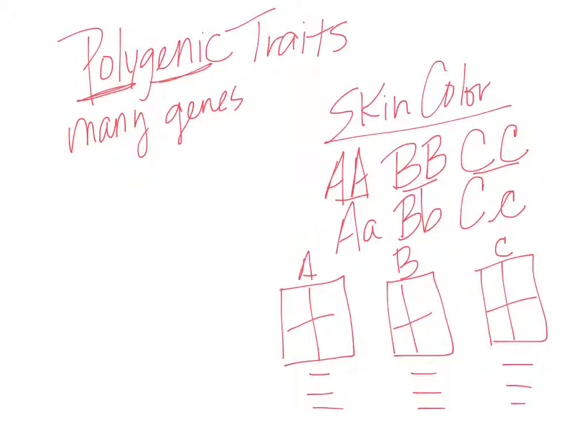But the big thing here is polygenic are traits where many genes are going to be determining your trait. And when you have polygenic traits, you end up with a wide range of phenotypes. So you end up with lots of different phenotypes just because of all the different combinations that you can get from all those different genes. All right, hope that makes sense.